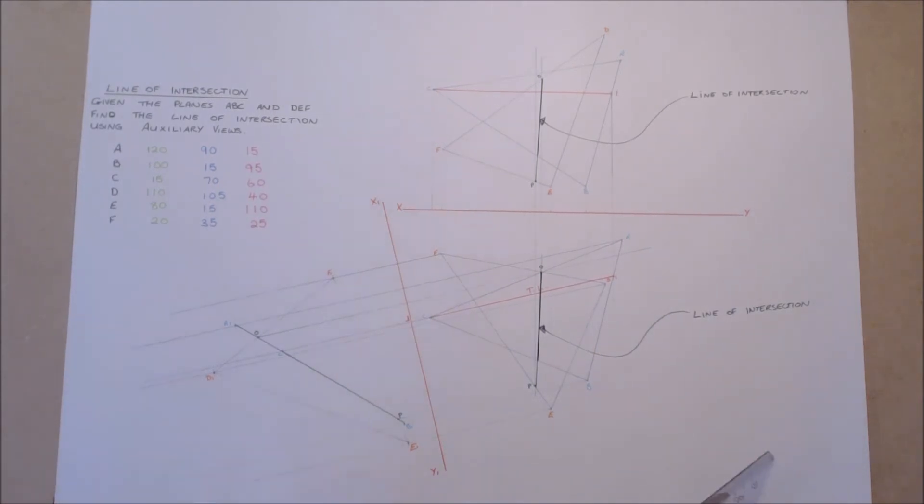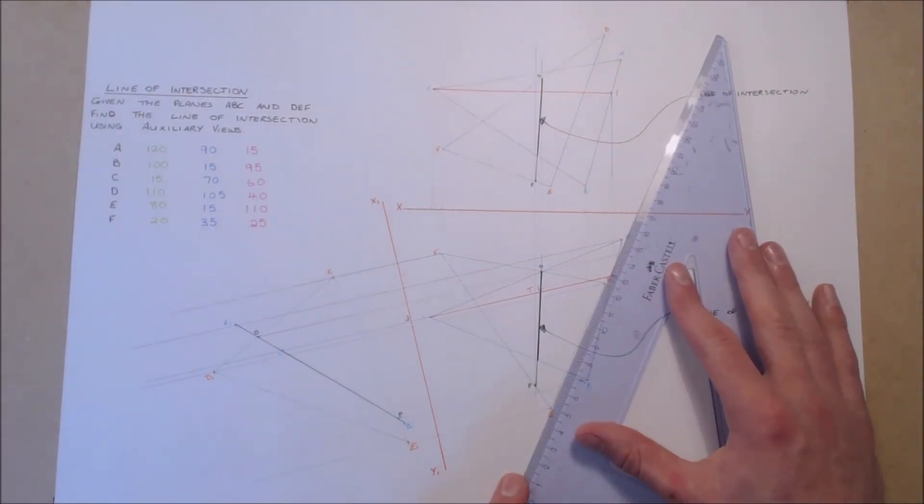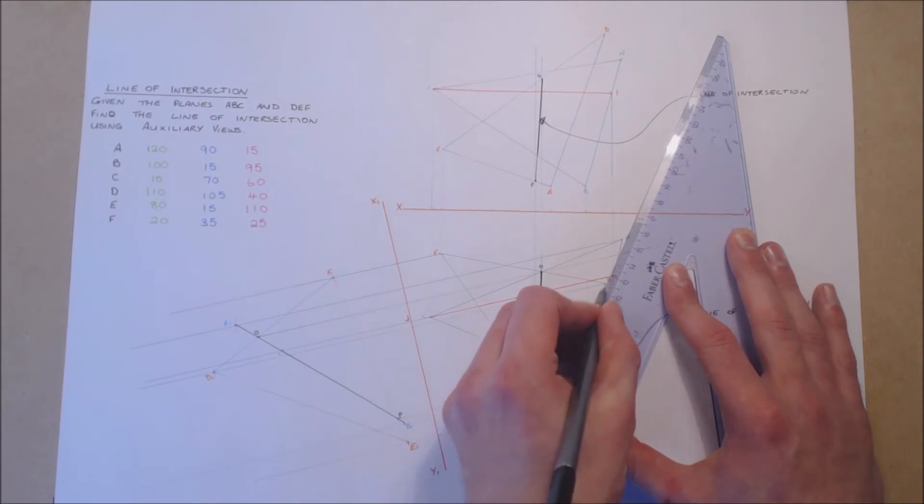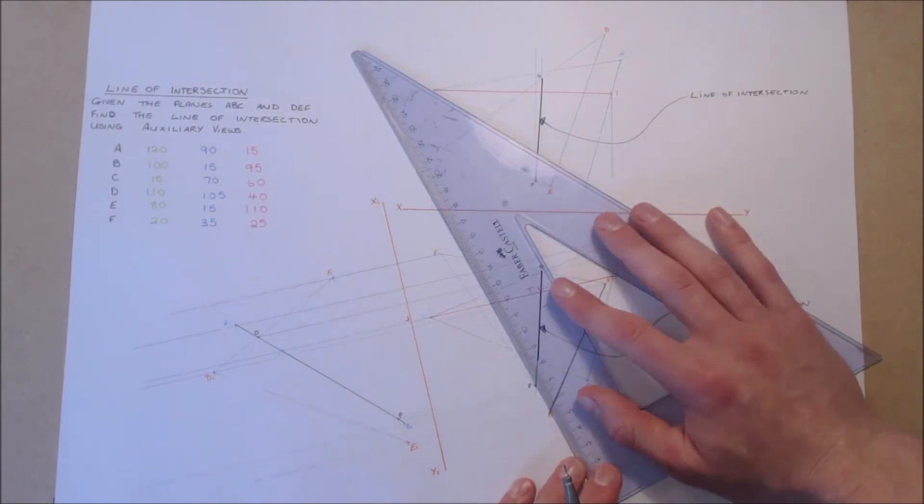Once the line of intersection is found in the plan and the elevation, we can determine which lines will be seen and which lines will be hidden on our planes.